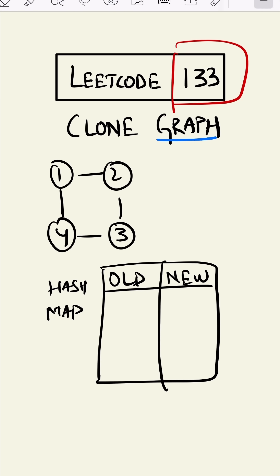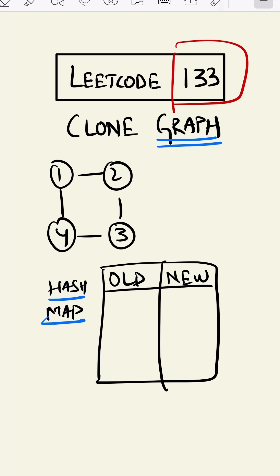Since our graphs are cyclic — two is a neighbor of one and one is a neighbor of two — we'll keep track of all the nodes in a hash map to avoid duplicating our nodes. Let's see how we can clone our graph.